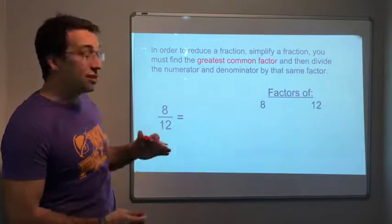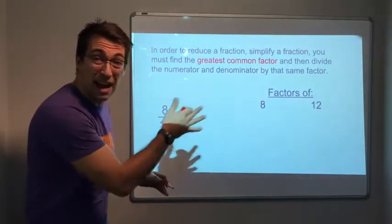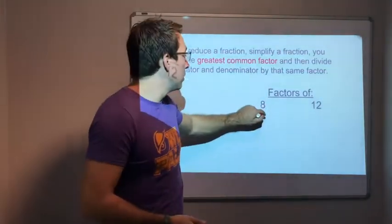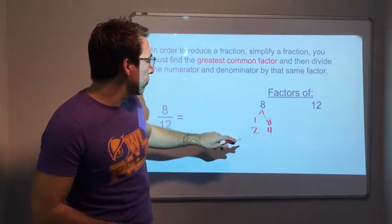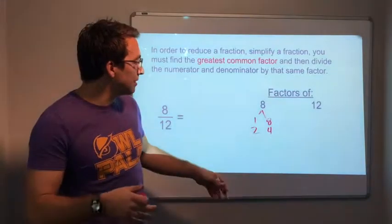So factors of 8 and 12. Last problem we had 9 out of 12. What is 8 out of 12? 1 and 8. 2, 4. 2 times 4 is 8. That's it.